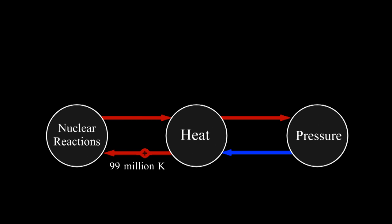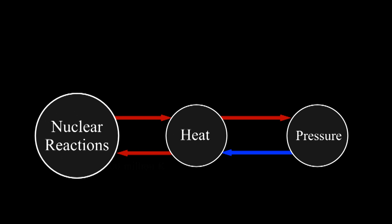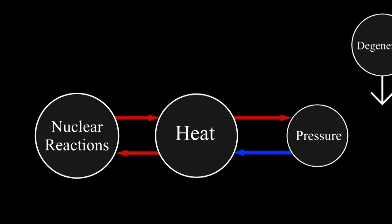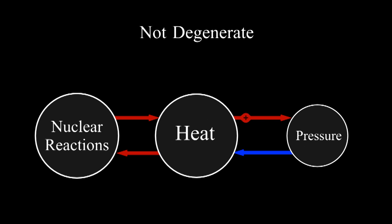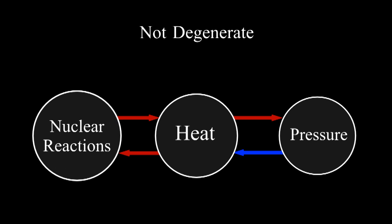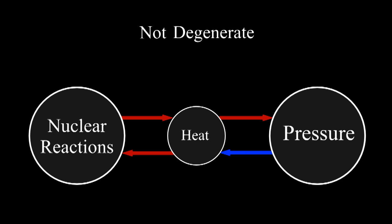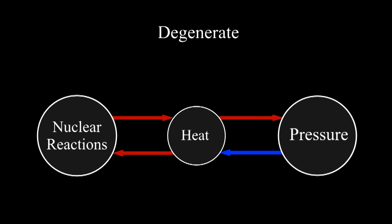Eventually, the sun will be hot enough to burn helium. Helium burning produces lots of heat. But something strange happens now, because the core is degenerate. Ordinarily, heat is the main source of pressure. As temperature rises, the pressure rises too. Rising pressure causes the gas to expand and then cool. Ordinarily, the temperature is controlled. But in a very dense gas, the main source of pressure isn't heat.